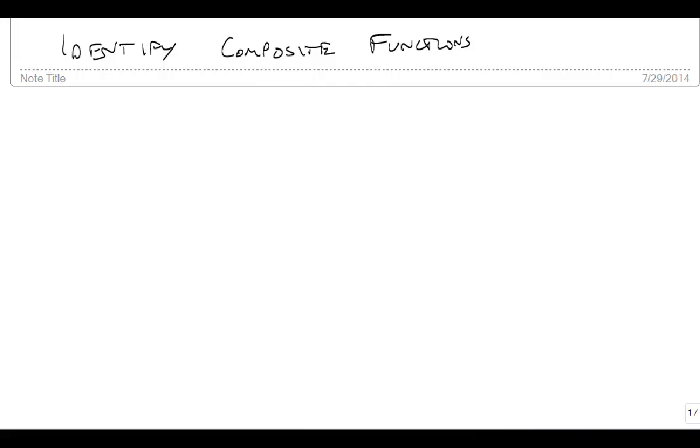We're now going to talk about how you can recognize and identify a composite function. A composite function is generally made up of two pieces, an f of x and a g of x.